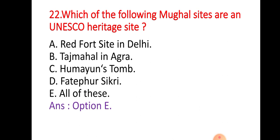Question 22: Which of the following Mughal sites are a UNESCO Heritage Site? Option A: Red Fort in Delhi; Option B: Taj Mahal in Agra; Option C: Humayun's Tomb; Option D: Fatehpur Sikri; Option E: All of these. The right answer is all of these — Red Fort in Delhi, Taj Mahal in Agra, Humayun's Tomb, and Fatehpur Sikri have all been included in the UNESCO World Heritage Site list.